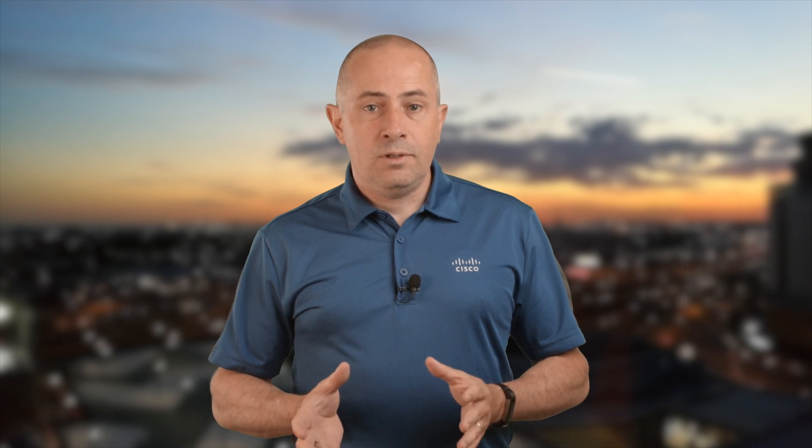This new line card is powered by a single Jericho Plus chipset — remember the dash-A in the product name. As Bernard said, no eTCAM came with it. So considering the size of the internet today, we don't support a full V4 plus V6 view in the FIB anymore.